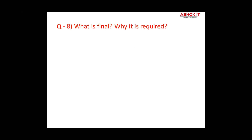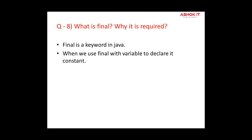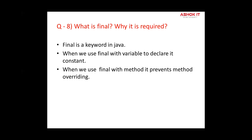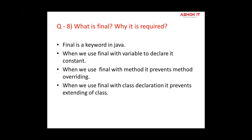Question eight: What is final and why is it required? Final is a keyword that can be used with variables, methods, and classes. When used with a variable, the final variable cannot be re-initialized with another value. When used with a method, the final method cannot be overridden. When used with a class, the final class cannot be extended.